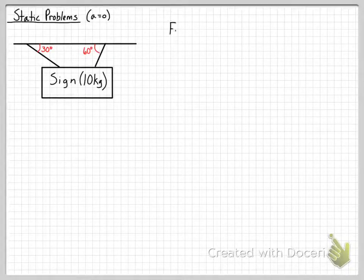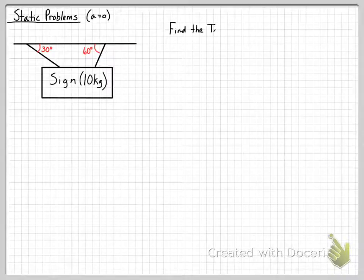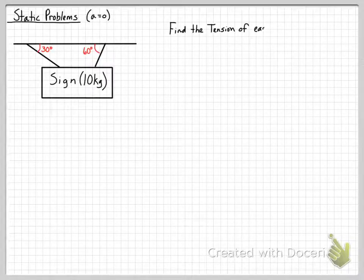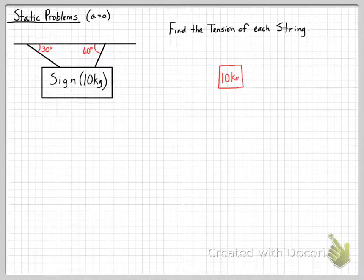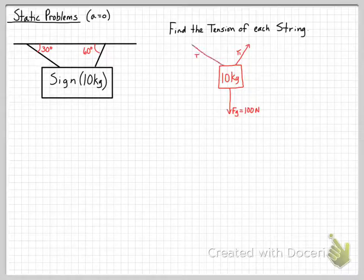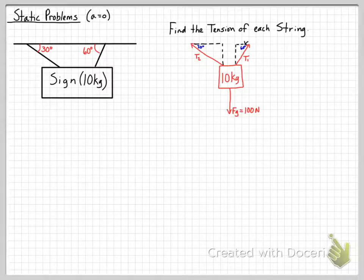Here we have a sign of 10 kilograms held by two strings. One string acts at a 30-degree angle and the other at a 60-degree angle. We want to find the tension of each string. We redraw the diagram with weight acting down at 100 newtons, and tension 1 and tension 2 acting at their respective angles. Since the forces are at angles, we'll separate them into x and y components.